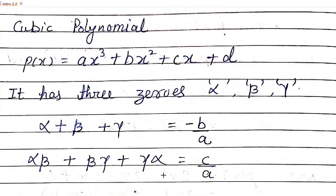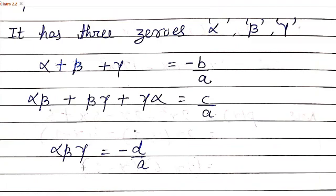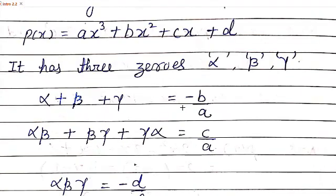Now we go towards cubic polynomials — this part is for understanding only and is less relevant for the examination. A cubic polynomial is of type ax cubed plus bx squared plus cx plus d, where a, b, c, d are real numbers and a can't be zero. A cubic polynomial intersects the x-axis at 3 points and has 3 roots: alpha plus beta plus gamma equals minus b by a; the sum of pairwise products alpha·beta plus beta·gamma plus gamma·alpha equals c by a; and the product of all three roots alpha·beta·gamma equals minus d by a. Memorize this and we will move to exercise 2.2.